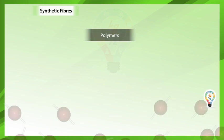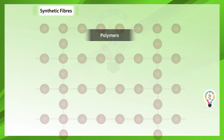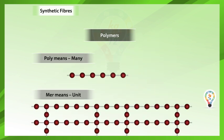Certain fibers are made of many units joined together to form a large unit. These are called polymers. Poly means many. Mer means unit.